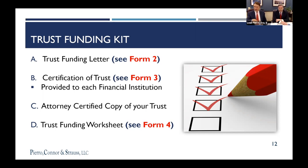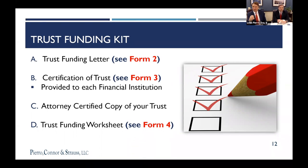We don't want the original circulating around, so we give you certified copies. You take that along with the certification to the bank or to your financial planner, and that's the document they may look to for further information. We also provide you with a trust funding worksheet that will allow you to track each and every asset as it is retitled. We ask that you provide that worksheet to us so we can prepare the last page of your trust, which is Schedule A.